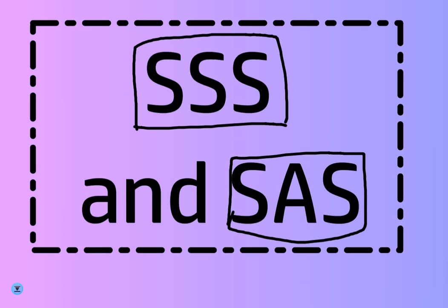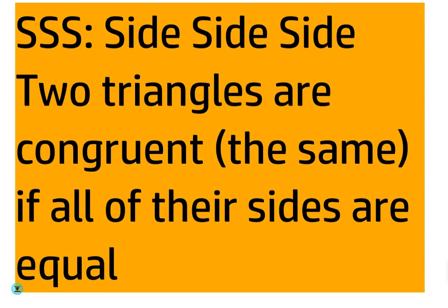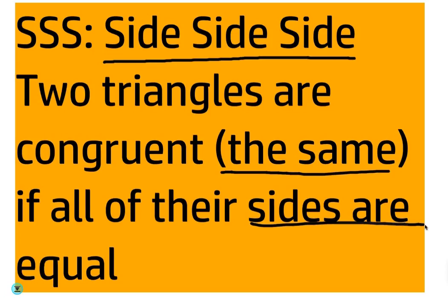So make sure you write down this information. Side, side, side. SSS means side, side, side. If two triangles are congruent, I'm sorry. Two triangles are congruent, meaning the same triangle, if all of their sides are equal. Once you're done copying that, I will write some examples down of that.